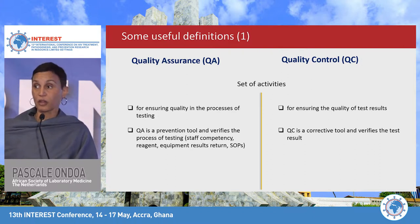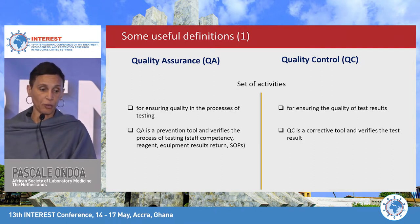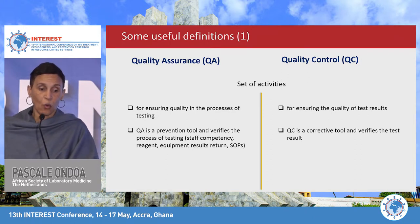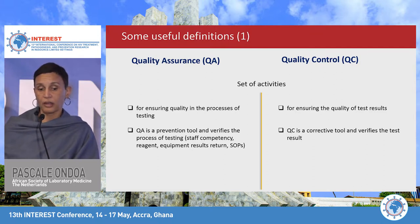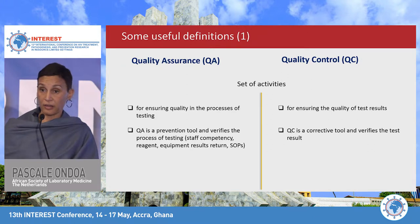There are also important definitions to clarify. Many people talk about quality assurance and quality control interchangeably, but they are both sets of activities with different purposes. Quality assurance is used to ensure quality in the process of testing, while quality control is used to ensure the quality of the test results. Quality assurance is more like a prevention tool, and quality control is more like a corrective tool to check the test results.